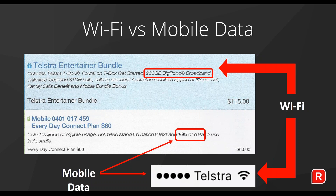Whether it's your modem or someone else's modem — like a modem in a hotel, at the airport, shopping centres, libraries, or your work environment — Wi-Fi sends an electronic signal to the modem to enable you to connect to the internet. Mobile data, however, needs a SIM card in the device to connect to the internet. What that SIM card does is turn your phone or your iPad into its own portable little modem, but to do that the device must have a SIM card.